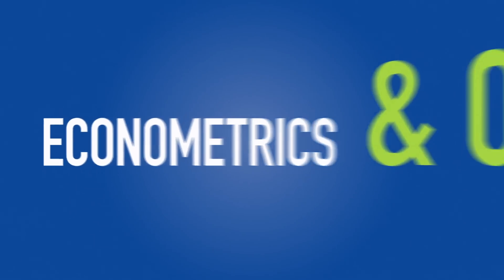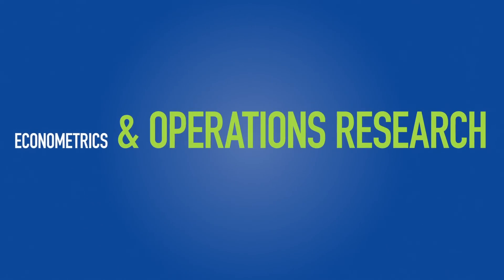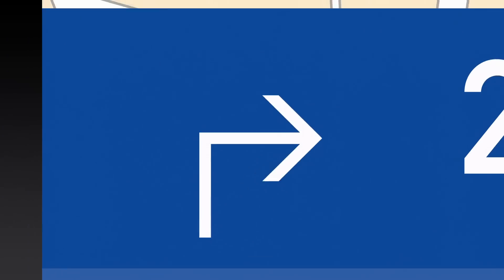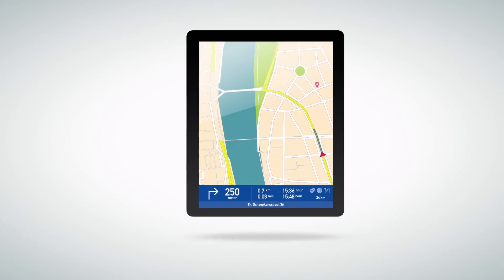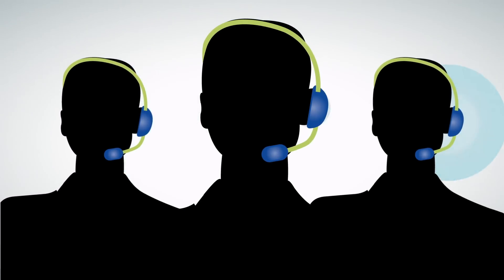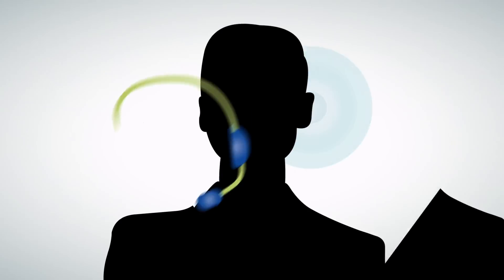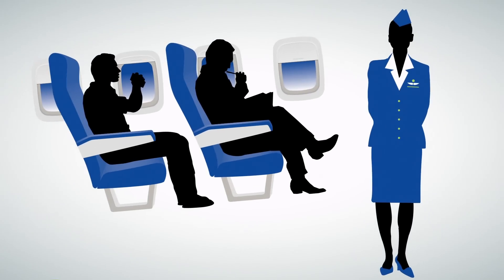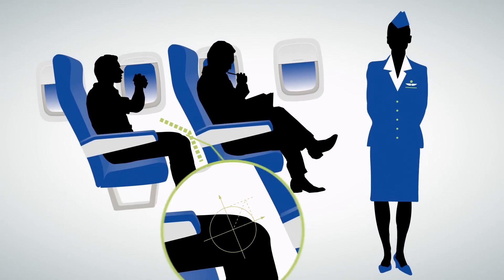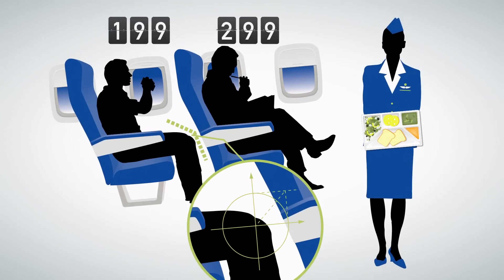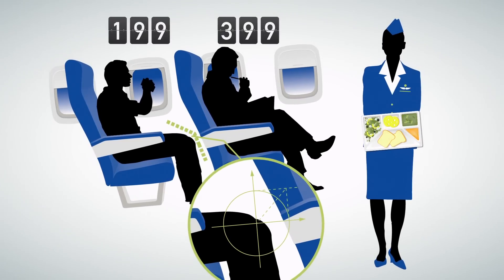Econometrics and operations research are also used on a smaller scale, influencing your daily life. These techniques are used to set up logistic systems or to determine how many people are needed in a call centre. They can also set the price of an airline ticket. Did you ever sit in an airplane and wonder why the person next to you, with the same amount of leg space and the same onboard lunch, paid half the price you did? Econometricians know why.